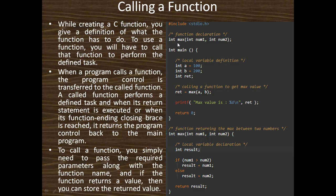This is a simple example. In this program, we are defining a function after the main function, and this is the function declaration which is called the prototype of the function. First we define the header file, then the function prototype. This function returns an integer type value, function name is max, and there are two parameters, num1 and num2, both integer values.